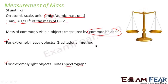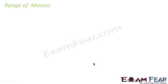So to summarize: the SI unit for mass is kg, but for very small atomic-scale masses we use the atomic mass unit (amu). Normally mass is measured by a common balance, but for extremely heavy objects we use gravitational methods, and for extremely light objects we use the mass spectrograph.